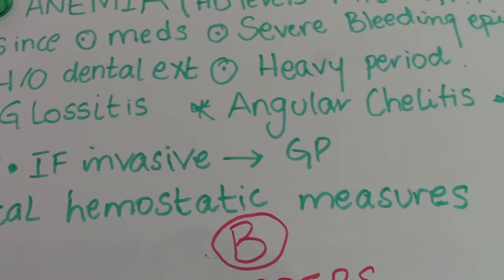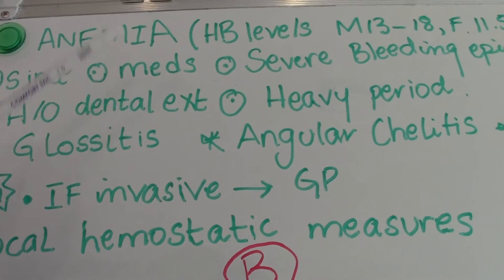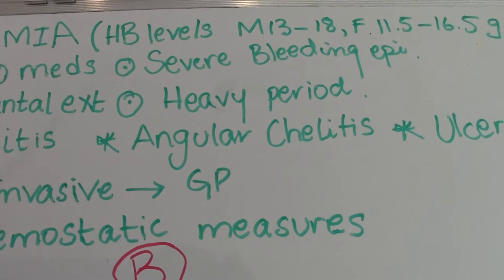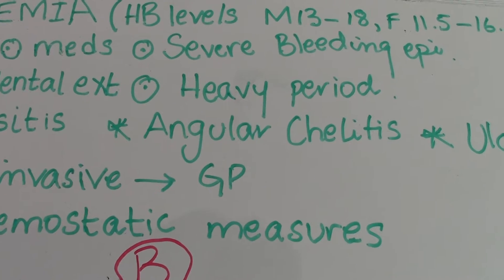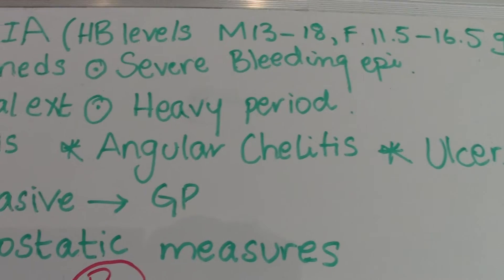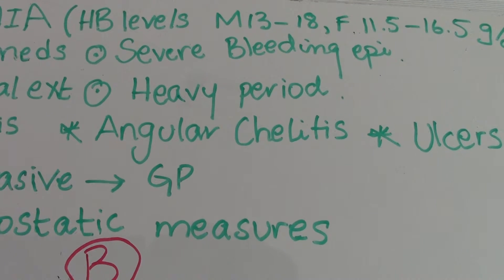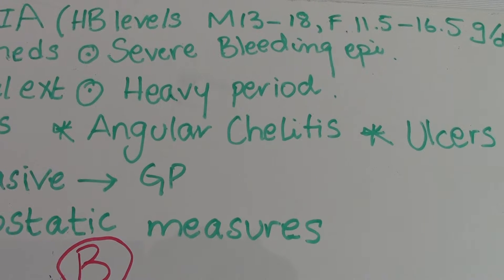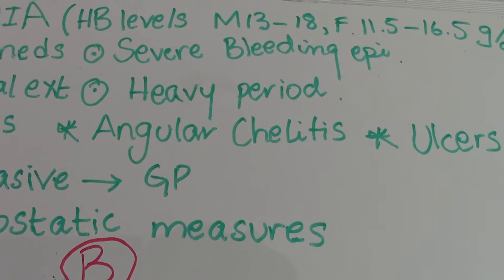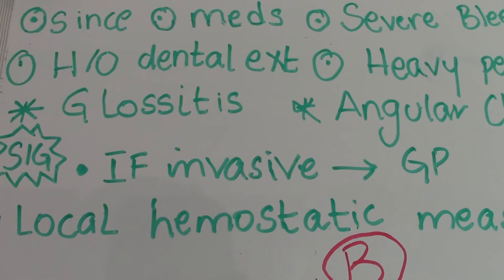When taking a history for anemia, just like any other condition, we ask since when they've been diagnosed, if they're taking any medications and what dose — this could be in the form of iron tablets. We also ask if they've had any severe bleeding episode, such as getting a cut and bleeding severely.